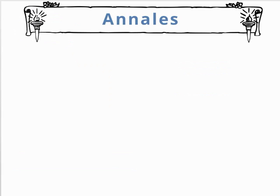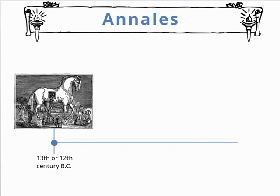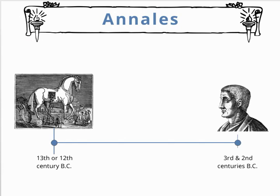His major poem, the Annales, covered Roman history from the Trojan War to Ennius's own time. It sadly exists only in fragmentary form. This is a great loss for the study of Latin literature given Ennius's enormous influence on later Roman authors.